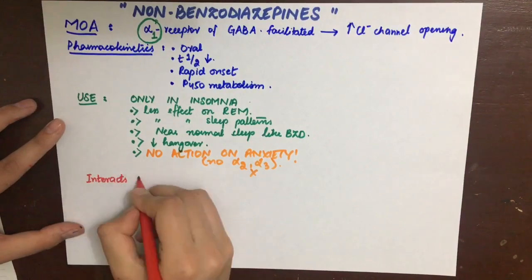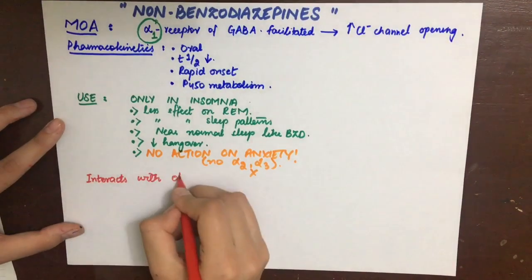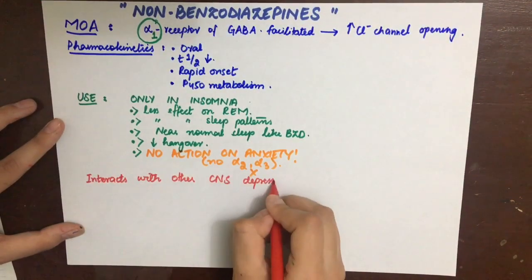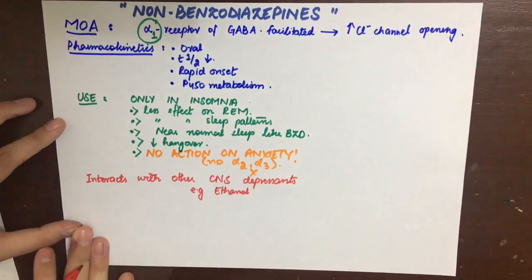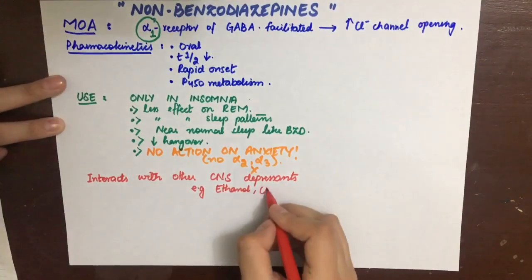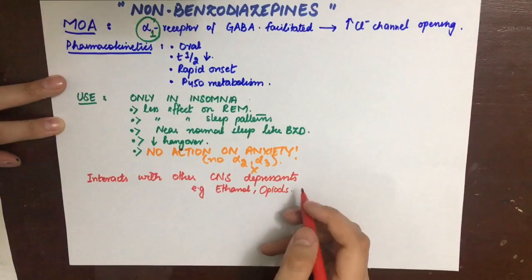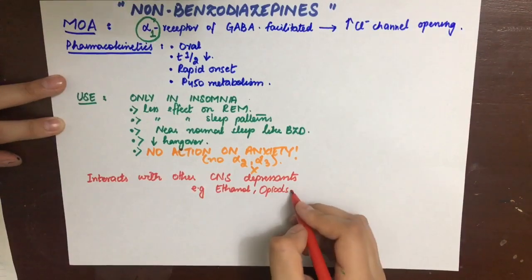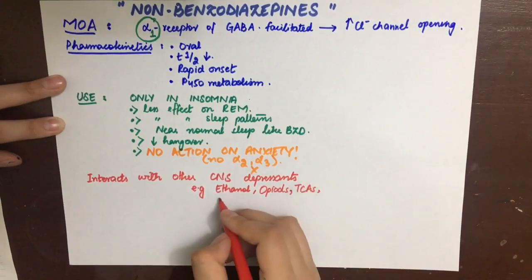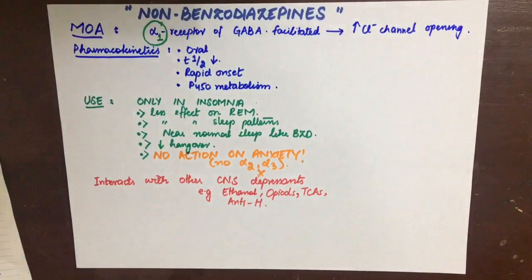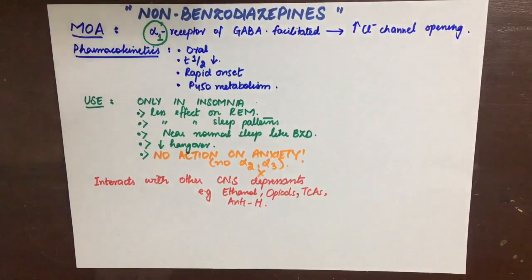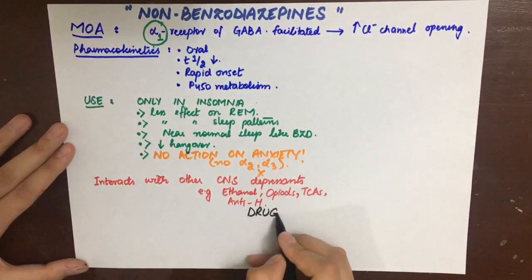When interacting with other CNS depressants — as they themselves are CNS depressants — they can increase the risk of respiratory depression, coma, and death. Examples include ethanol, opioids, TCAs, and antihistamines.